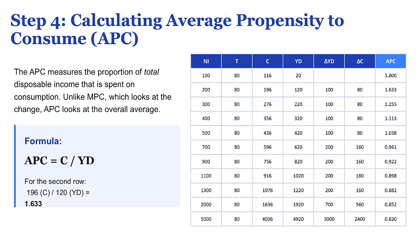Now, it's really important not to get the MPC mixed up with a similar idea called the Average Propensity to Consume, or APC. The APC looks at total spending as a piece of total income — it's the big picture. But the MPC is all about that next dollar. And that distinction is absolutely critical for policymakers trying to figure out the immediate impact of something like a tax cut.